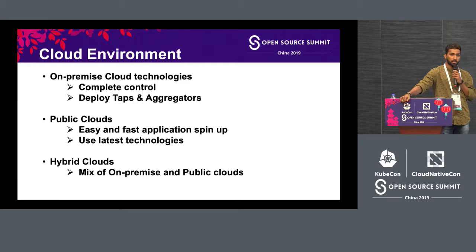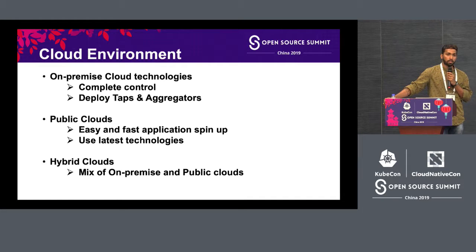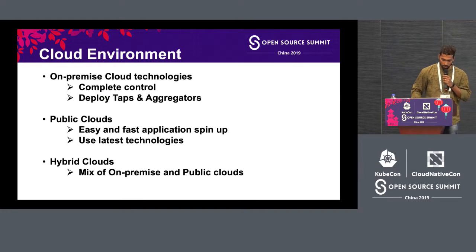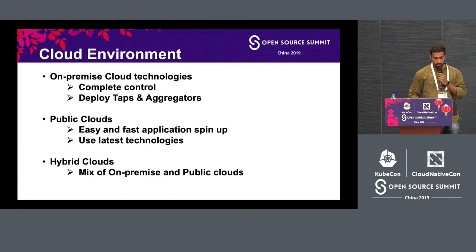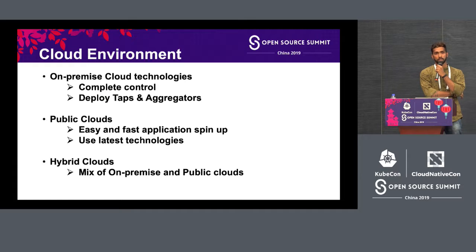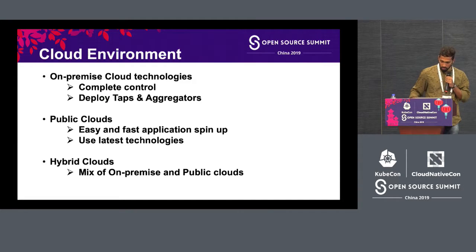With on-premise cloud technologies, we have complete control of the infrastructure — we can control routers, switches, and deploy network taps or network aggregators within our infrastructure. Public cloud is easier and faster to spin up applications. For instance, if you deploy a website and want to double the load, you can easily spawn additional instances. To mix both, we have the hybrid cloud.